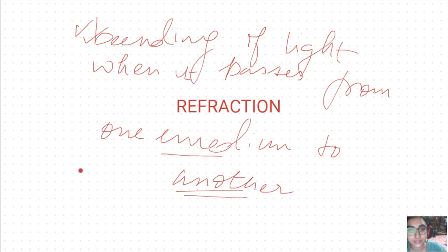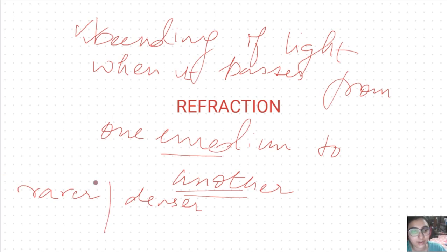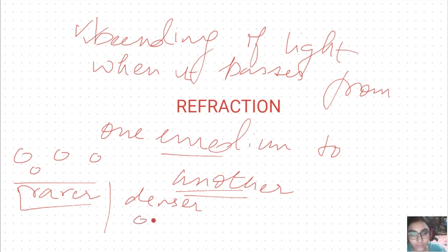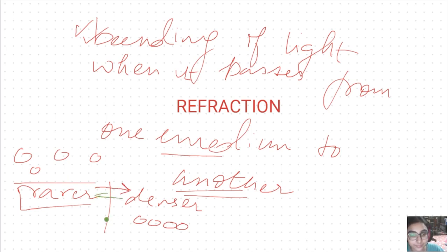The medium is categorized into rarer and denser. Rarer means the molecules are sparsely spaced, and denser means the molecules are more closely spaced. Whenever light travels from one medium to another, it can go either way, and accordingly the light will bend.